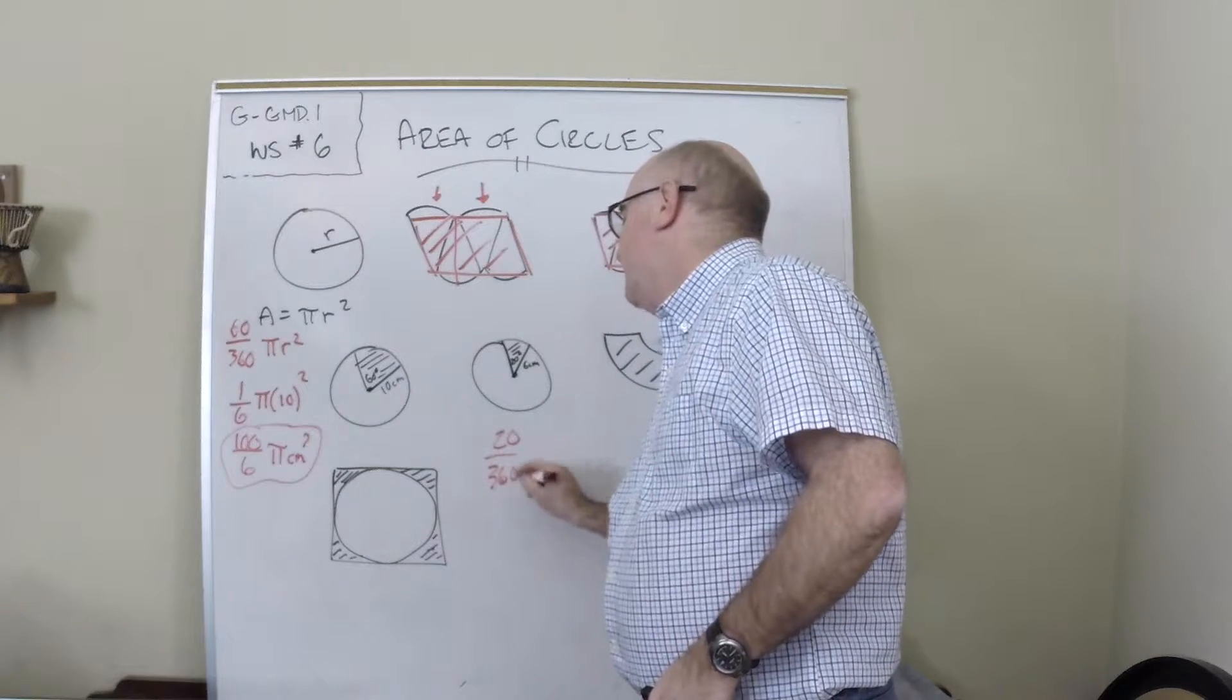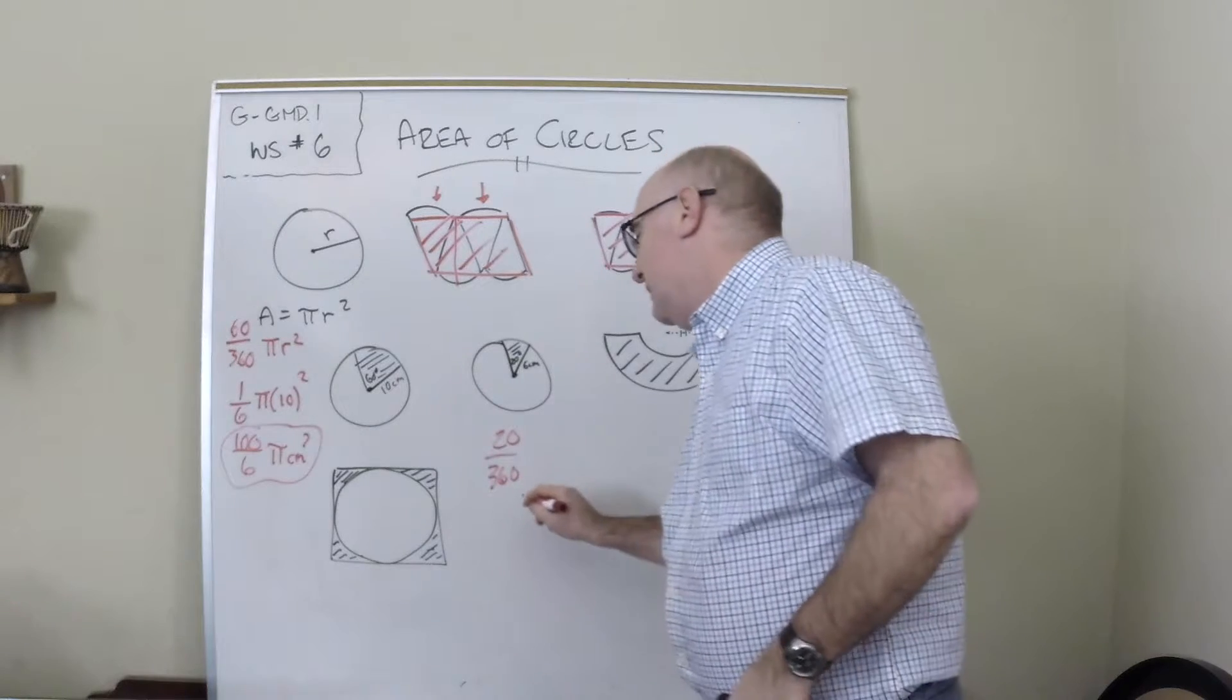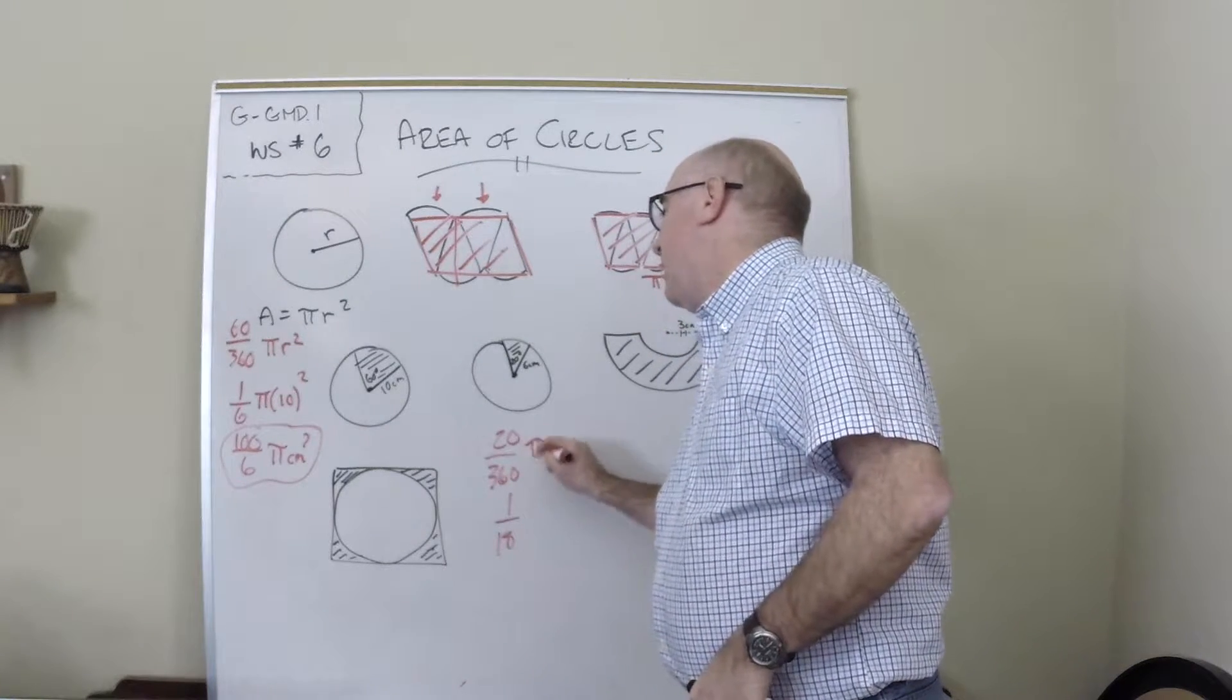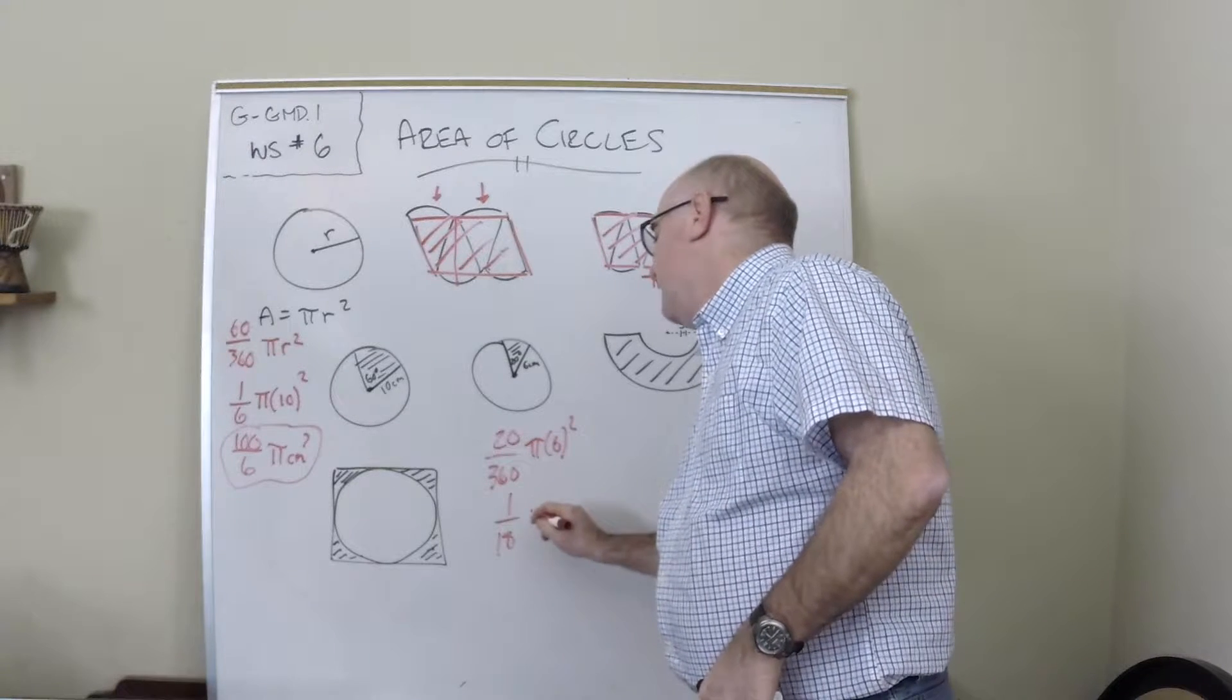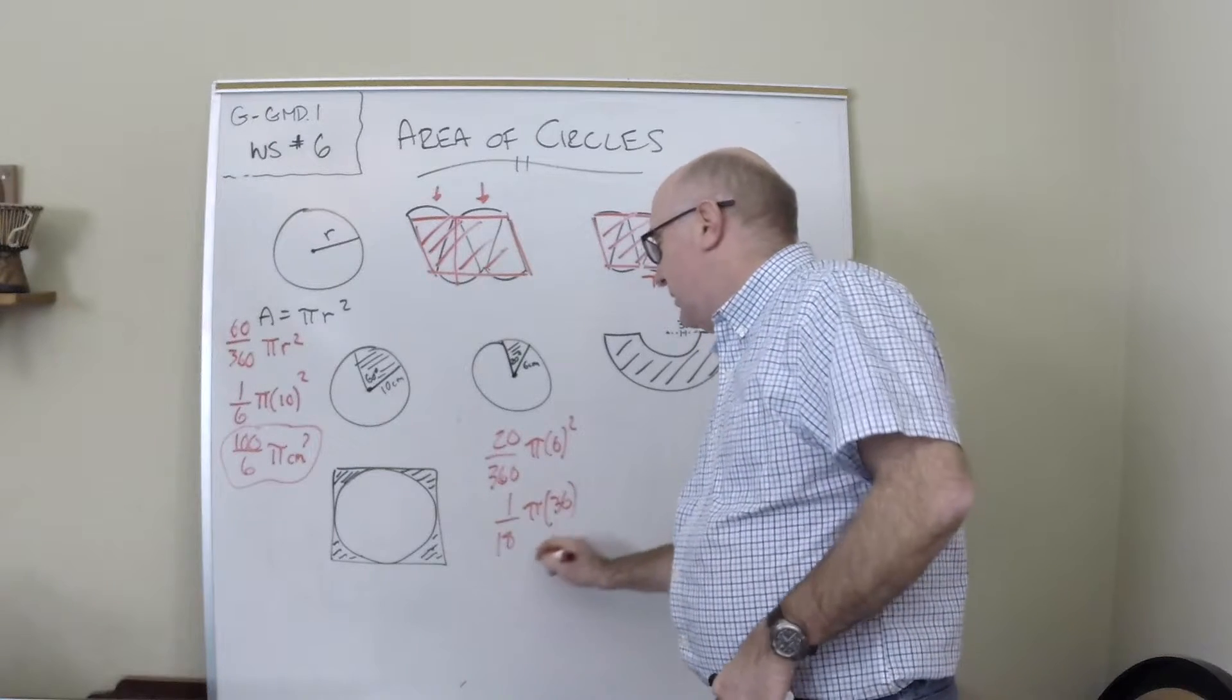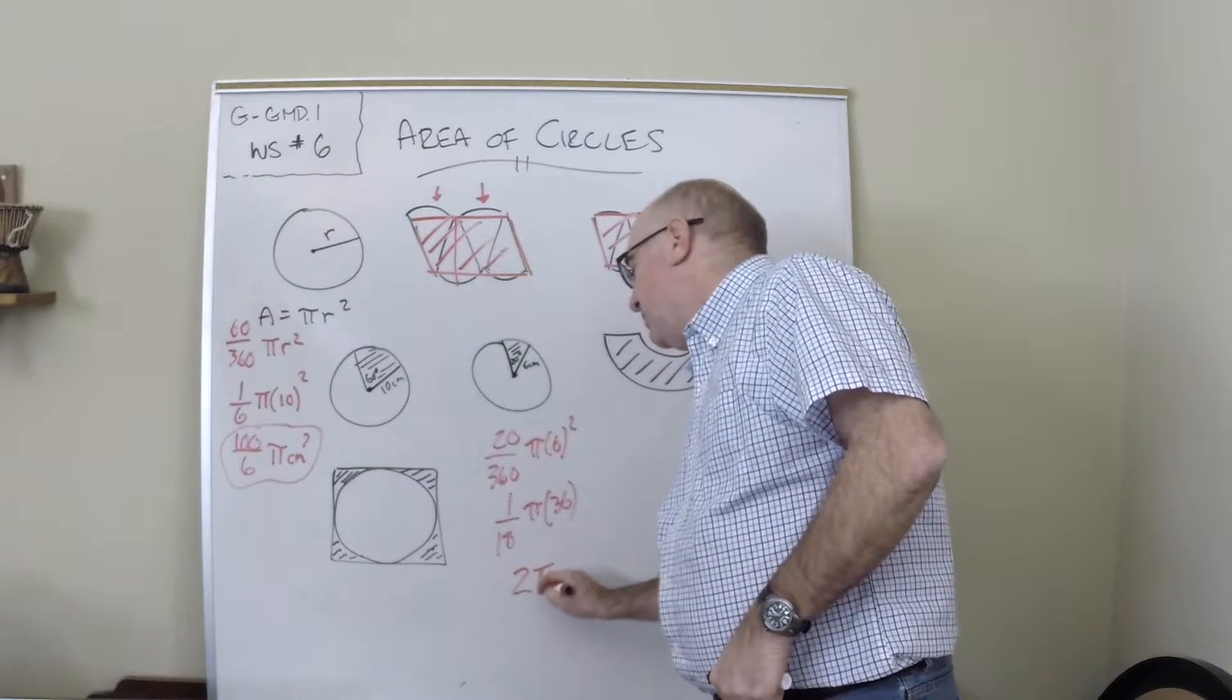So here we have a 20-degree one, so 20 out of 360. Again, that is a 1/18th relationship. Pi r squared—pi r squared which is 36/18—this actually comes out to just be 2 pi centimeters squared. A nice little relationship.